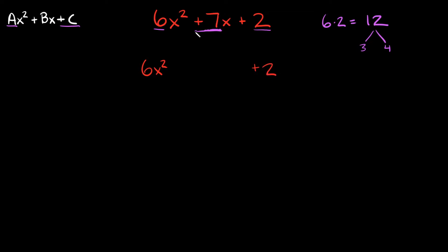Now your B term right here in the middle we're going to replace with the two numbers that we just found right here, a 3 and a 4. So instead of having plus 7x we're going to split it into plus 3x and plus 4x.